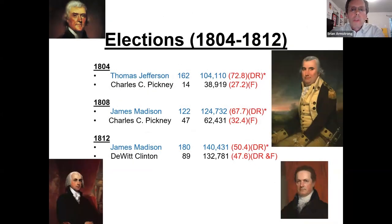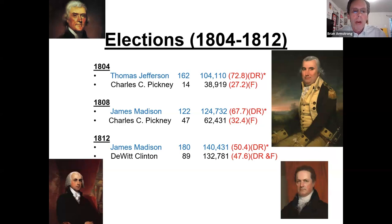The next few elections were calmer. Thomas Jefferson ran against Charles Pinckney and had very sizable electoral victories in 1804, 1808, and 1812 with the James Madison elections — also significant wins. Generally, when someone gets over 50%, that's a solid victory.